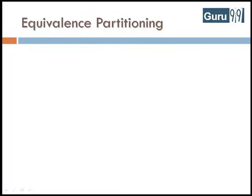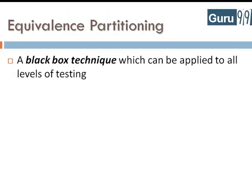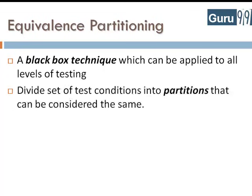Equivalence Partitioning is a black box technique which can be applied to all levels of testing like unit, integration, system, etc. A black box technique is a technique where the code is not visible to the tester. In this technique, you divide a set of test conditions into partitions that can be considered the same.